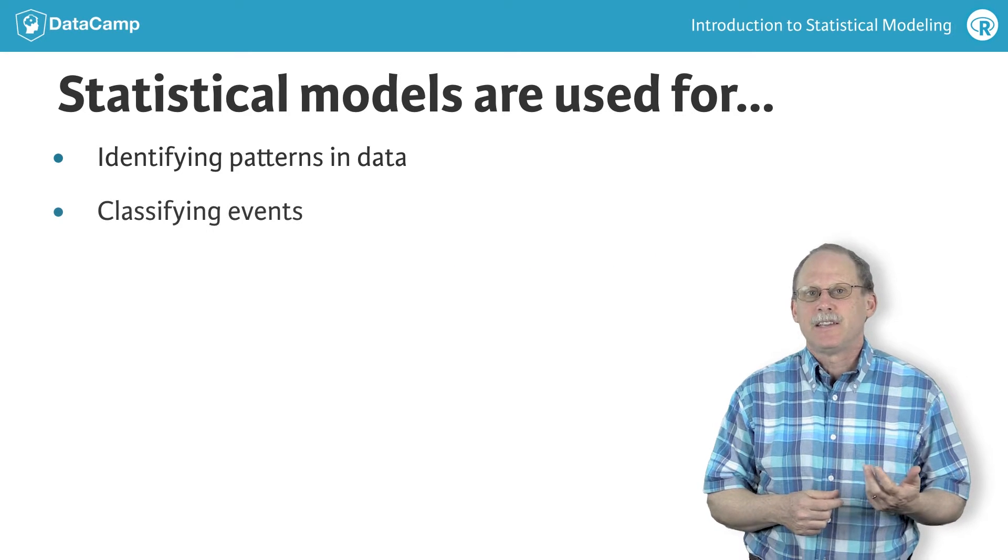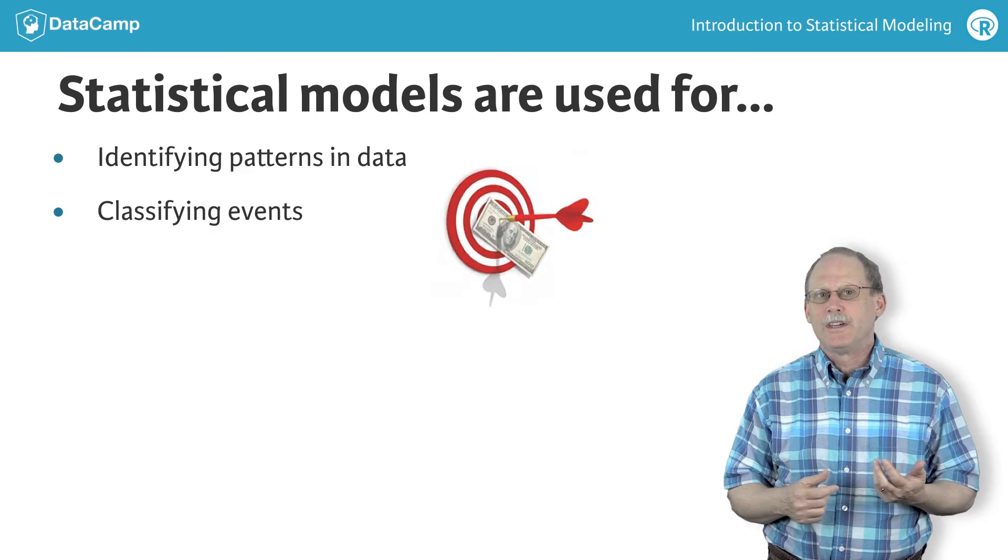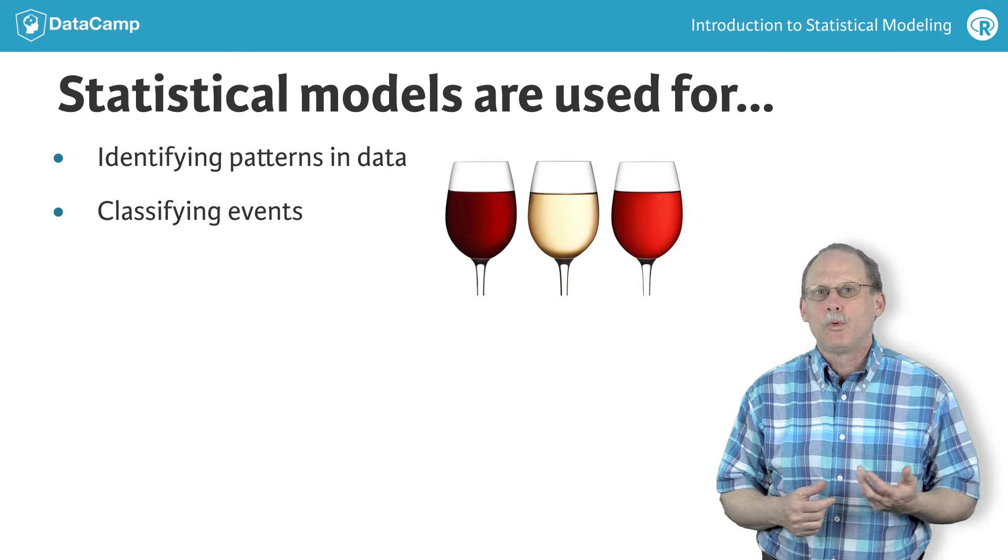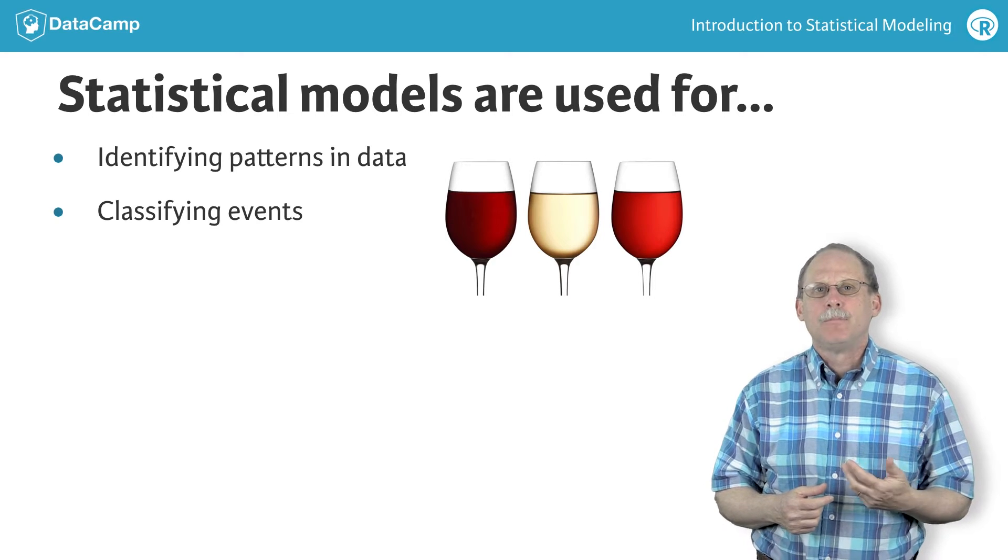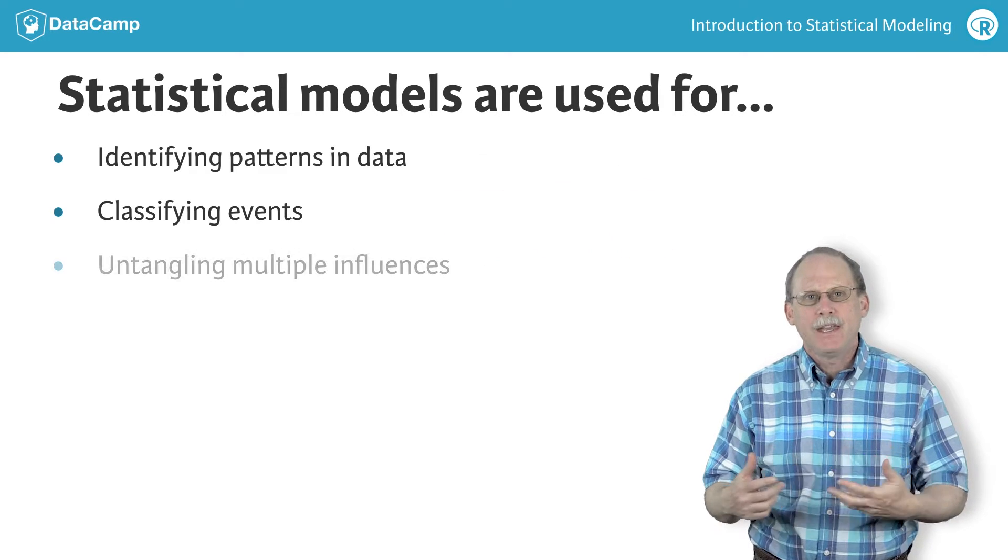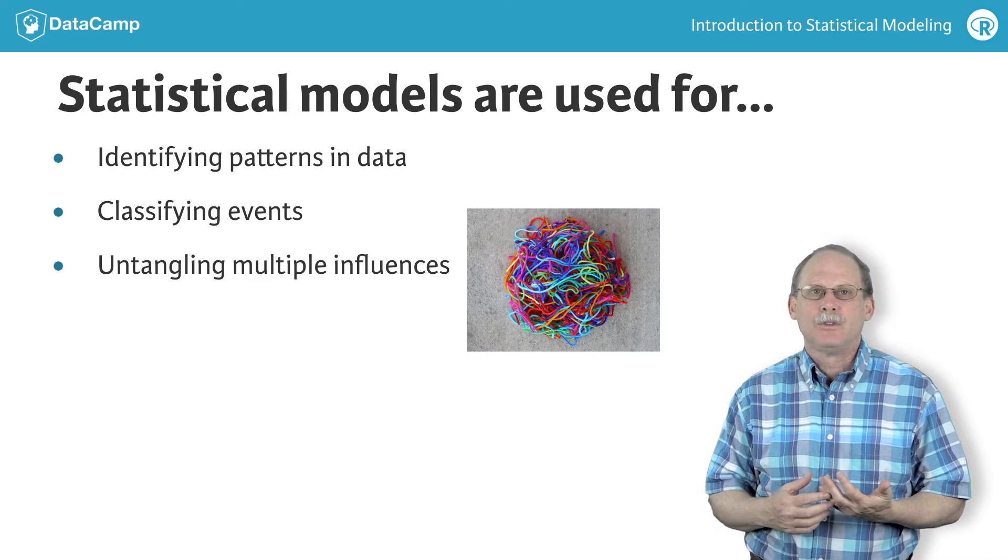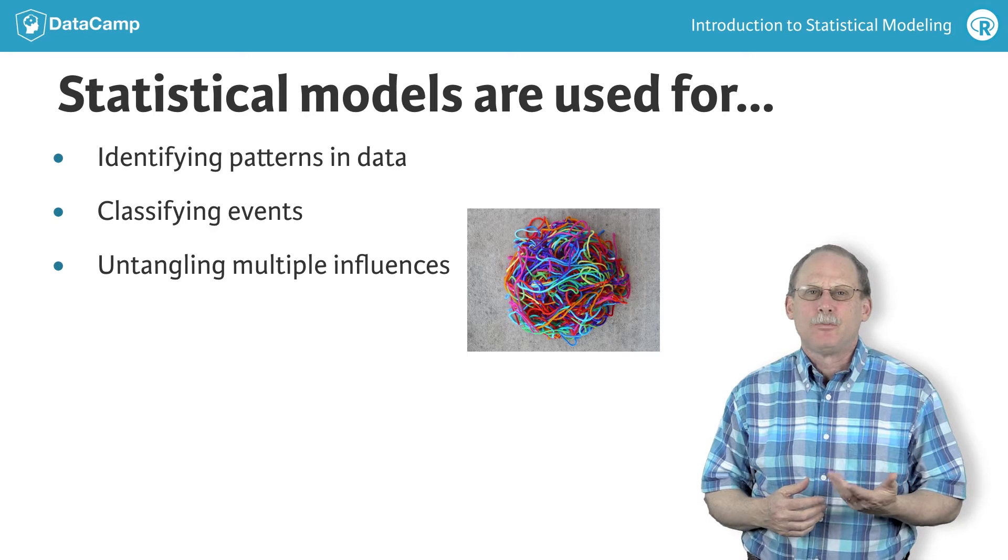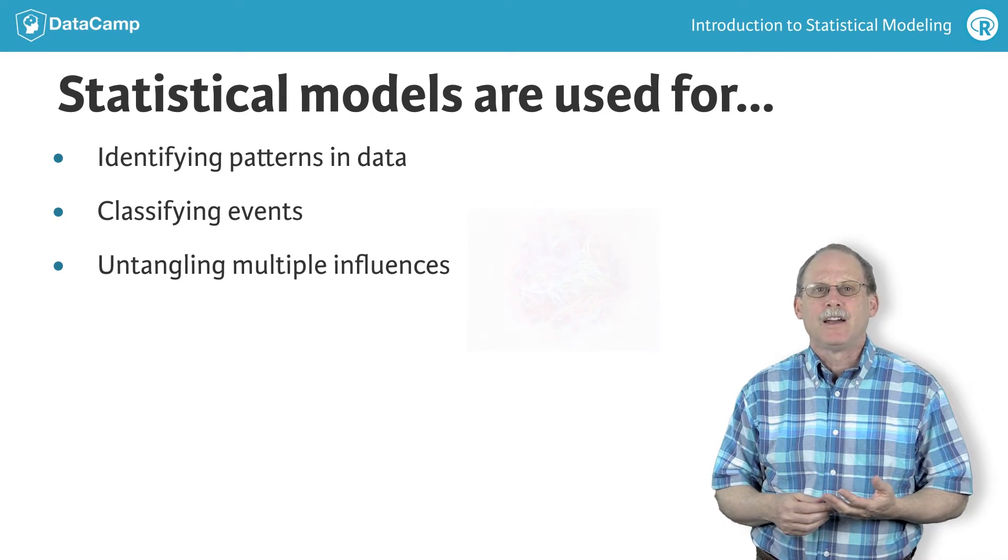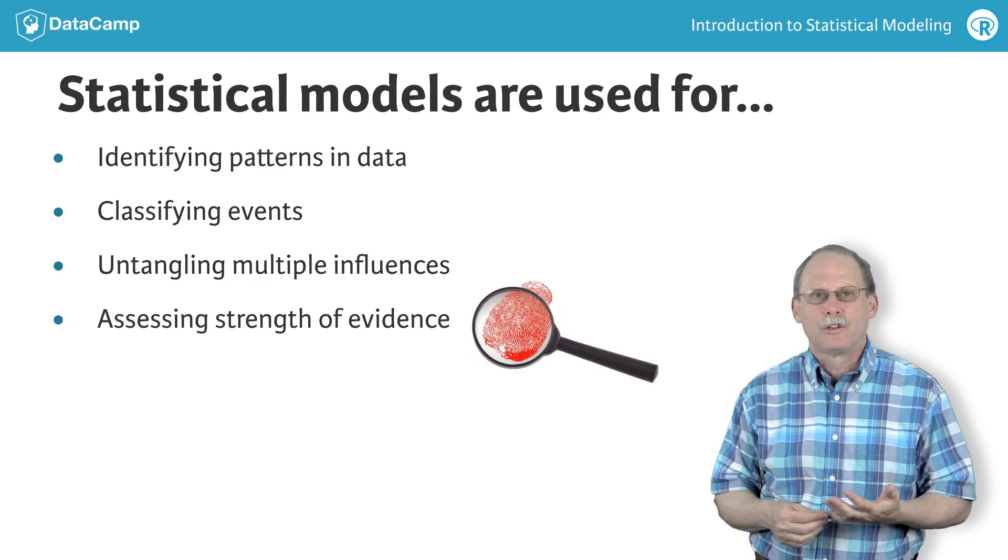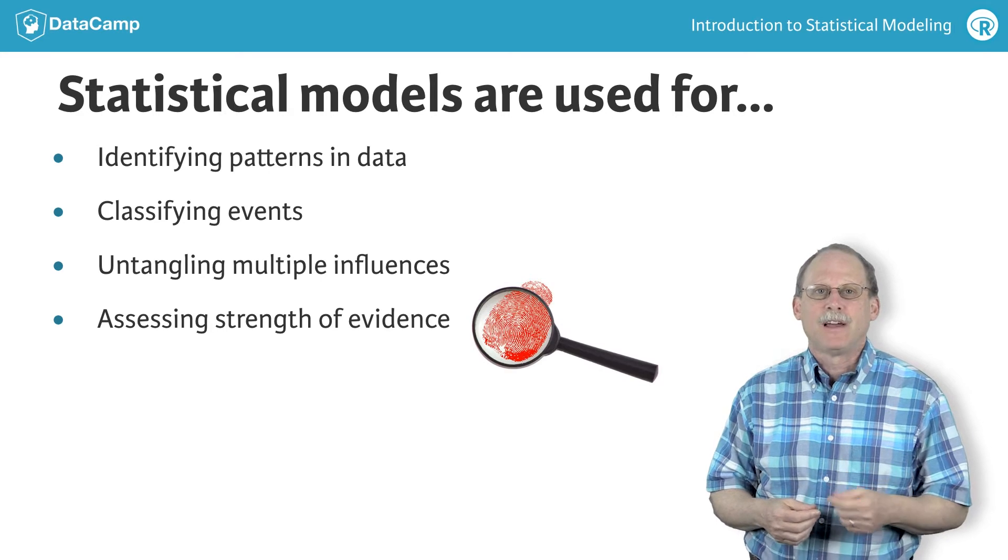The summary can be a way to translate from existing observations into conclusions. For instance, classifying a sales prospect as strong or weak, or a wine as excellent or poor. Very often, models are used to untangle the many influences that can shape an outcome, quantifying how each influence contributes. And models are an essential part of the process for quantifying the strength of evidence for a conclusion provided by the available data.